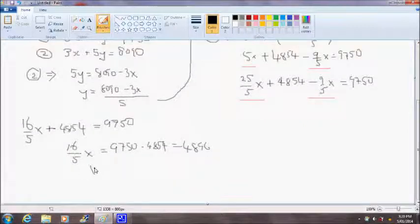And so x is equal to, if we times this side by 5/16, we'll get x on its own: 4896 times 5/16, which is equal to 1530. So we found that x, which is the weekly wage of a carpenter, is $1,530.